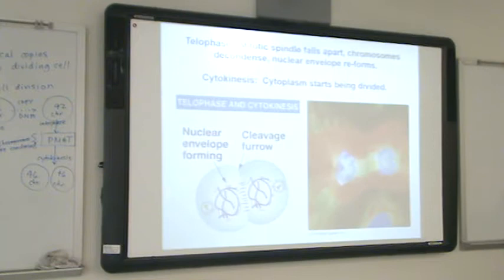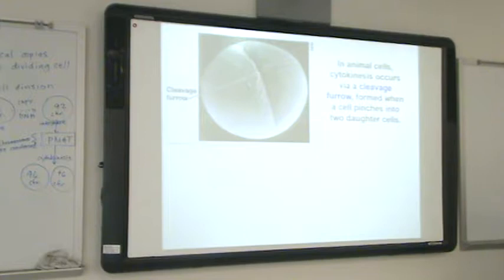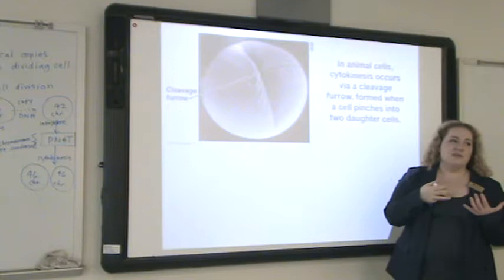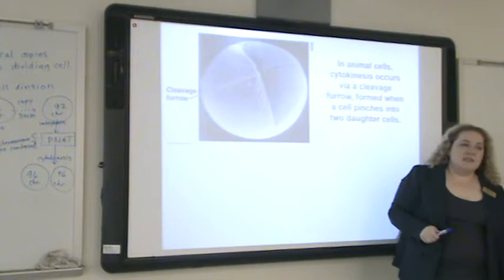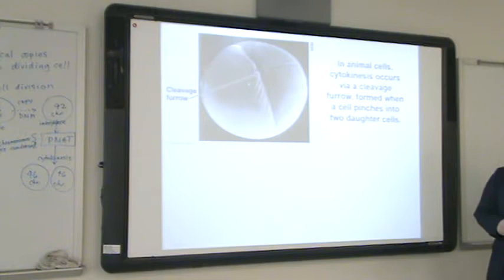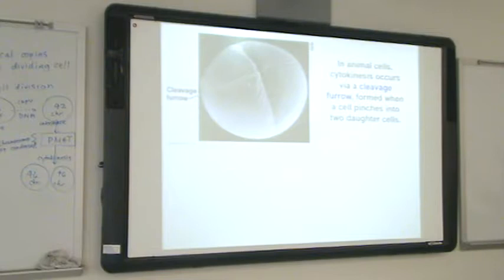Cytokinesis — the cytoplasm dividing — is technically not within mitosis but can happen at the end of it. I always teach students to look for the start of cytokinesis when identifying telophase, because those often go together. You look for two nuclei still technically in one cell. Here's a cell from the outside — it could be a zygote doing its first cell division. You can see the cleavage furrow as cytokinesis starts to divide those cells. That's just a review of mitosis stages in case you need it.